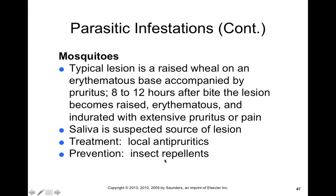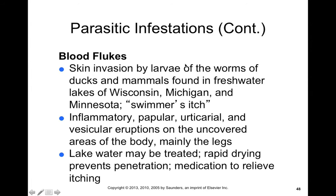Blood flukes are a type of parasitic infection — essentially a larva of worms that like to infect things like ducks and other freshwater mammals. You find this especially in the Great Lakes region — like Wisconsin, Michigan, and Minnesota — and it causes what we call swimmer's itch. This causes an inflammatory, papular, and itchy urticarial type of rash found in uncovered areas of the body when in lake water. Lake water may be treated for blood flukes; however, rapidly drying also prevents penetration. There are also medications to relieve the itching, but just making sure you brush water off your body as soon as you get out of a lake and not keeping your legs dipped in lake water too long is important because blood flukes can wiggle into your skin.